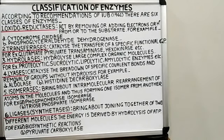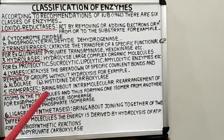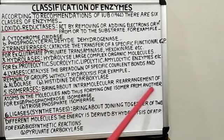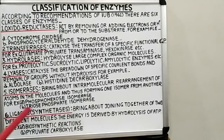The next class is isomerases. These enzymes bring about intramolecular rearrangement of atoms in molecules, thus forming one isomer from another. For example, phosphohexose isomerase changes glucose-6-phosphate to fructose-6-phosphate. Similarly, triose-phosphate isomerase converts 3-phosphoglyceraldehyde to dihydroxyacetone phosphate during anaerobic breakdown of carbohydrate into lactic acid.